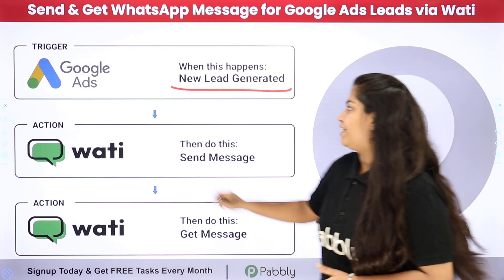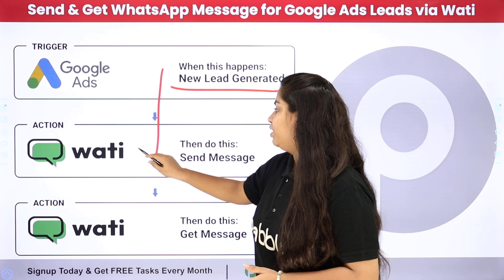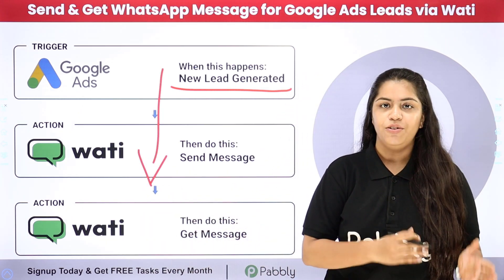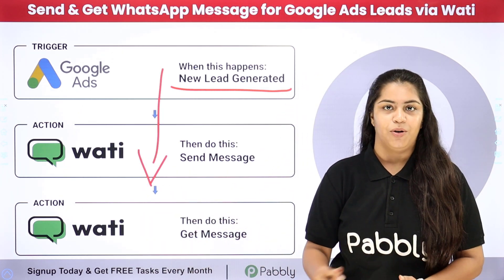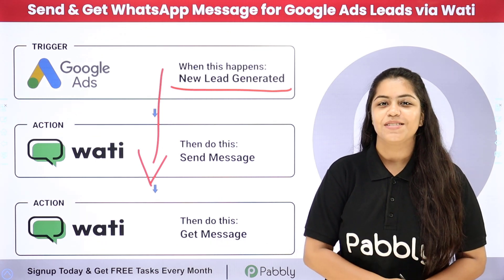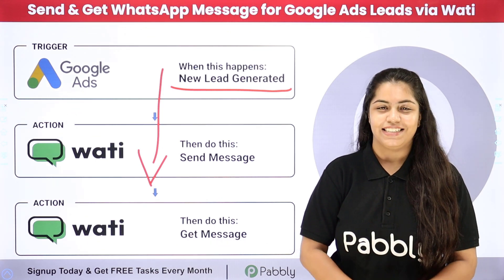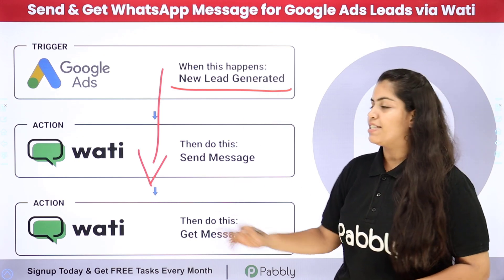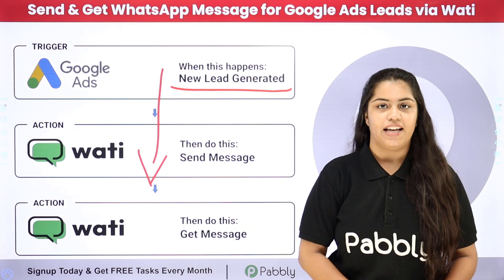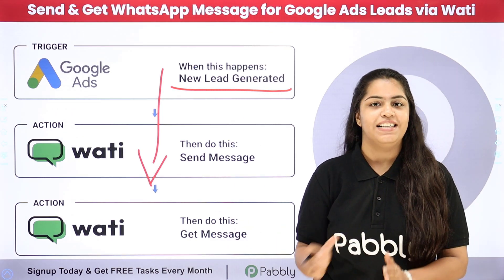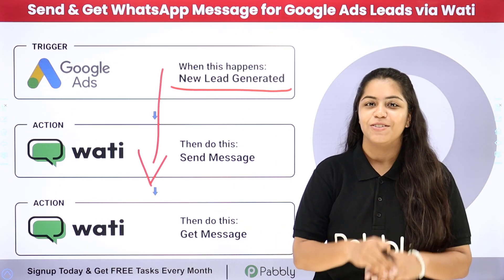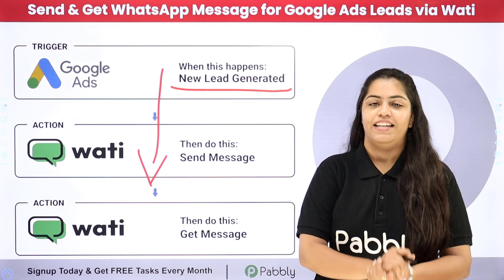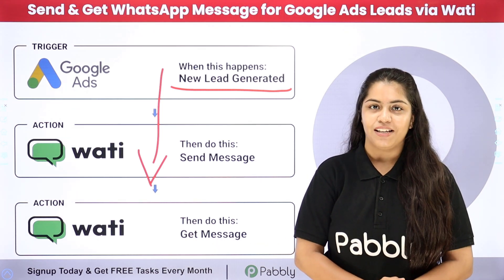To do this we are going to create a connection between Google Ads and Vati. To create this connection without knowing any programming or coding language, we are going to use Pabbly Connect — an amazing automation software — so that I can convert my leads into paying clients. Do you also wish to learn this process step by step? Let me take you to my computer screen.